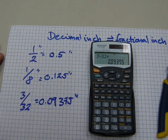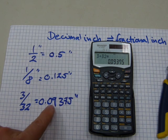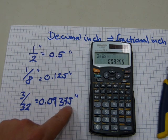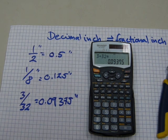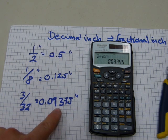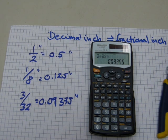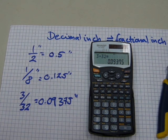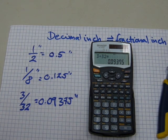There it reads nine thousand three hundred and seventy-five over one hundred thousand, which is the same as 3/32 of an inch.